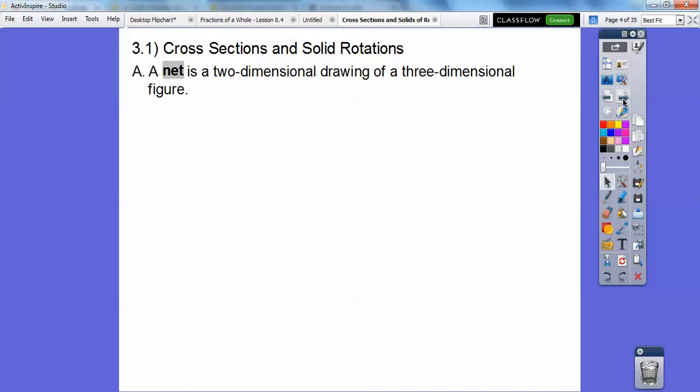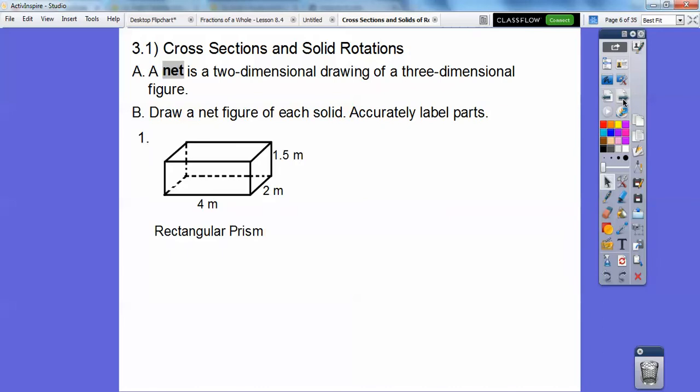We've dealt with prisms and cylinders and pyramids and cones and spheres. We can't do a sphere, but we can do a net figure of all the rest. Let's draw a net figure of each solid and label everything. A net figure is if you take scissors and cut straight down here and here and here, and then flatten it all out and unfold it. It would look something like that.